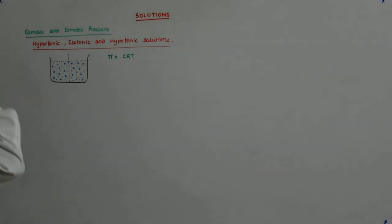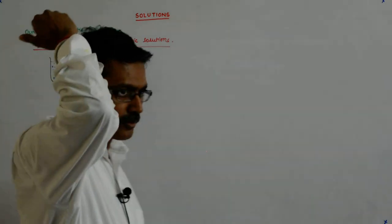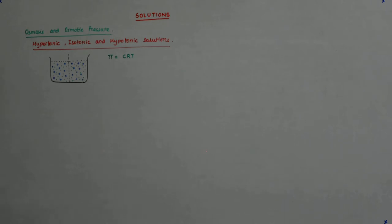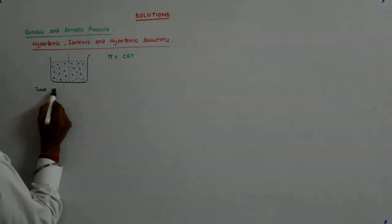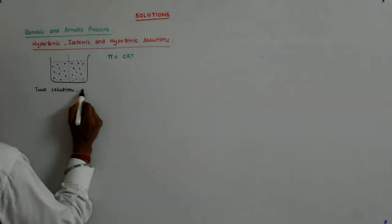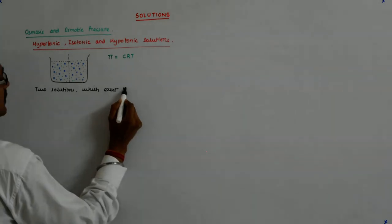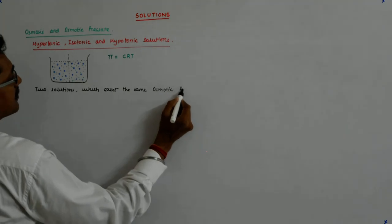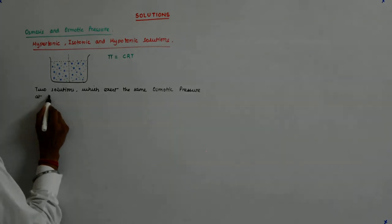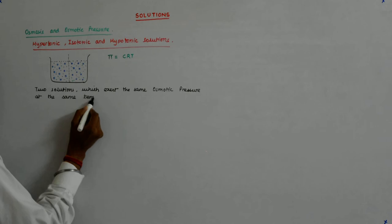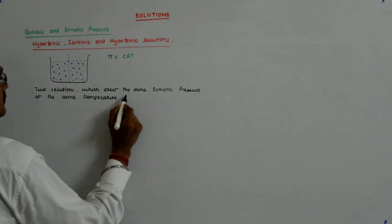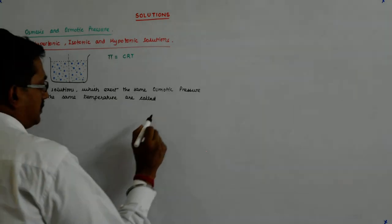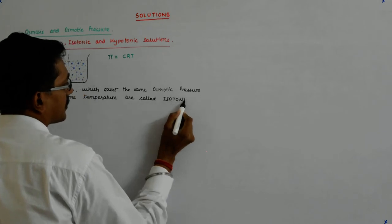Such solutions are called isotonic solutions. 'ISO' means same. Two solutions which exert the same osmotic pressure at the same temperature are called isotonic solutions.